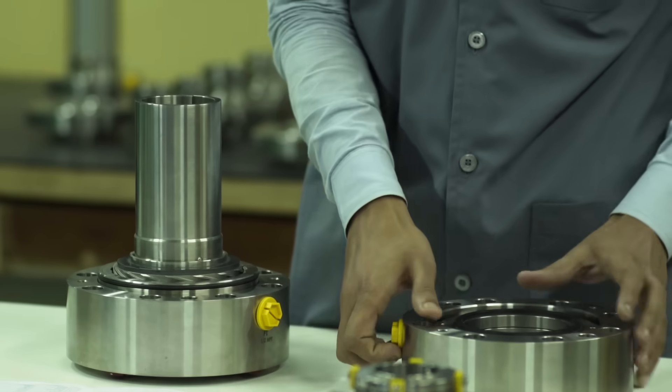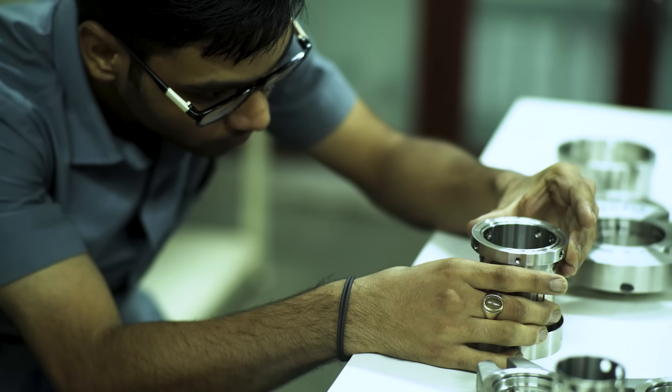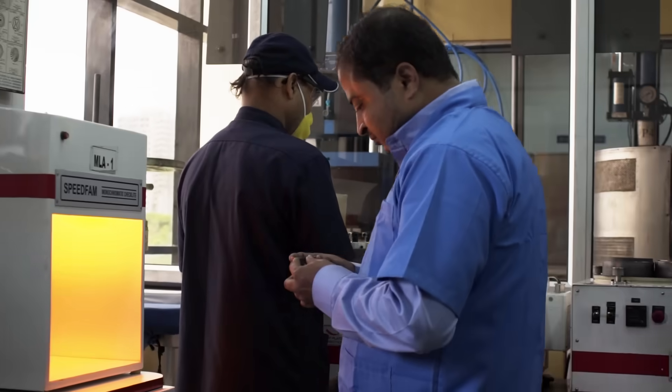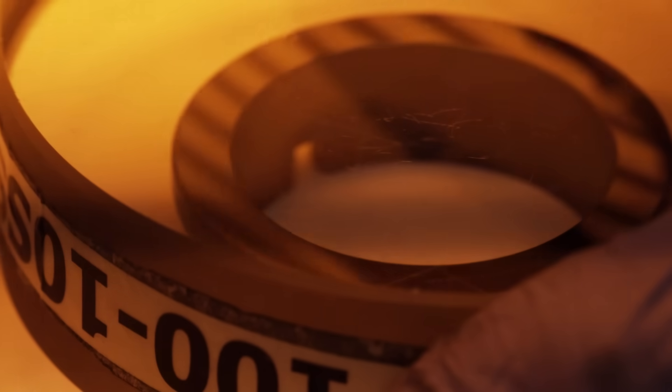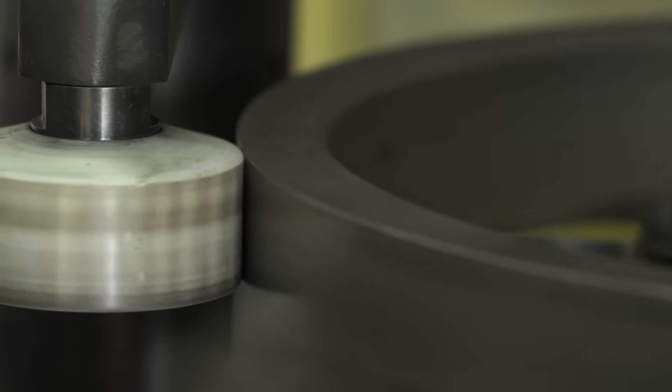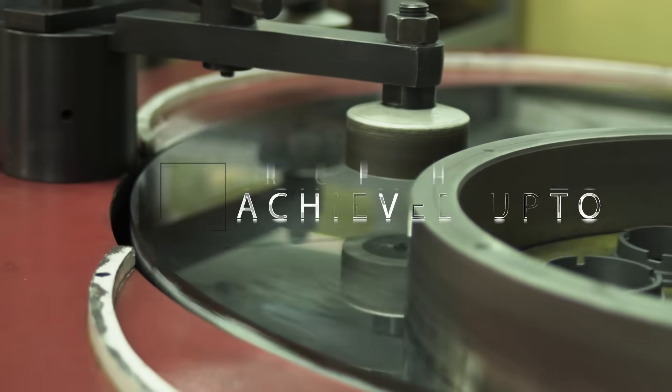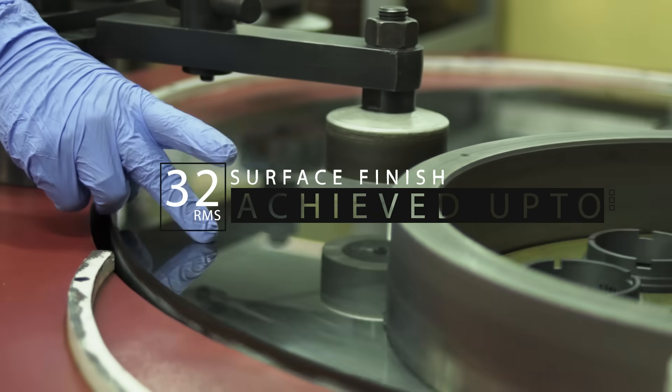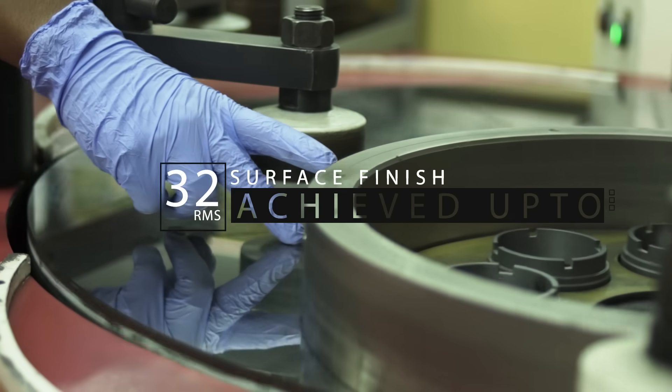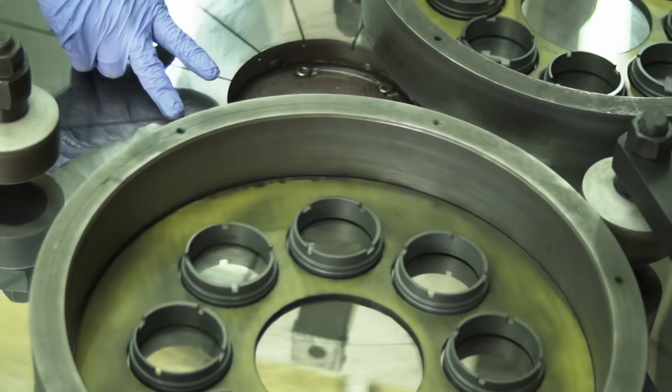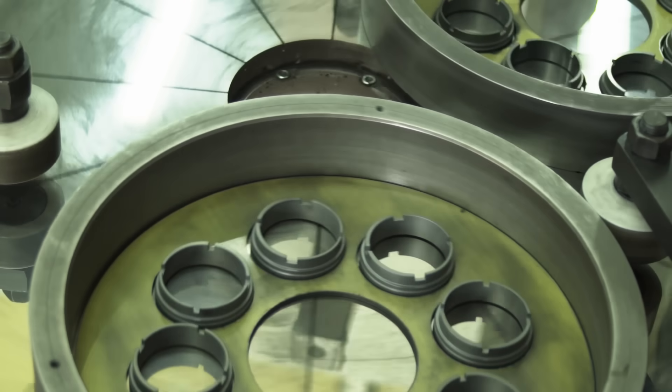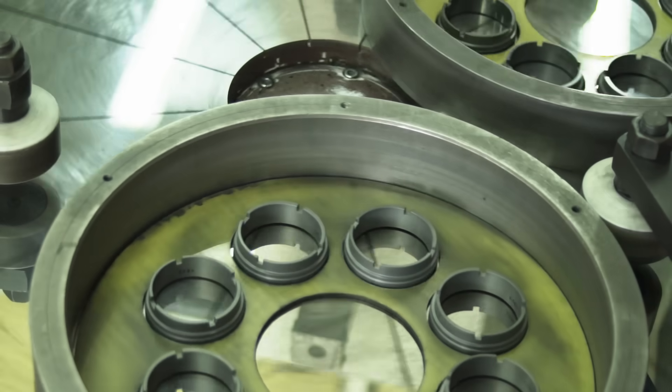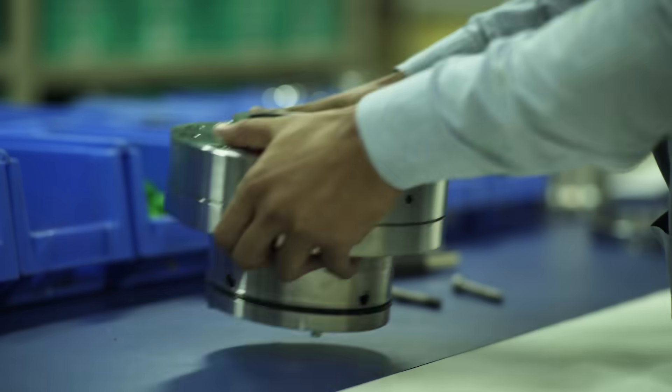Each and every component is cleaned in sterile condition. Primary seal face flatness is conformed within 1-2 helium light bands. Surface finish, where secondary O-ring or Teflon wedge will ride, is achieved to an accuracy of 32 RMS using sophisticated instruments. Proper assembly of mechanical seals is maintained as per seal drawing dimensions.